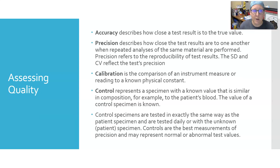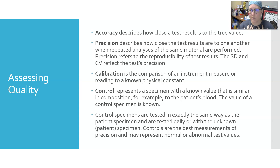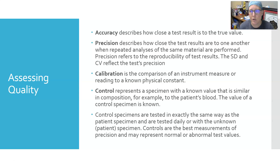Accuracy describes how close a test result is to the true value. Using glucose as an example: if the amount of glucose in your body is 80 mg/dL and you ran a test, if that test is accurate it would actually return 80 mg/dL. Precision describes how close test results are to one another when repeated analyses of the same material are performed.